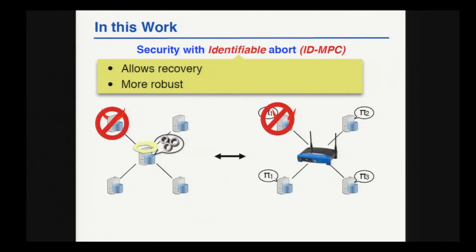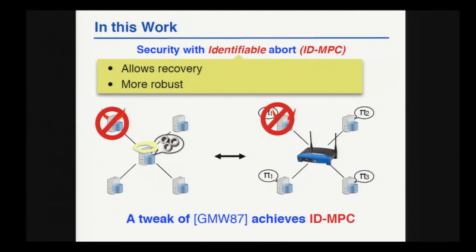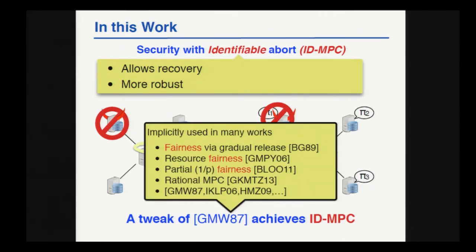In fact, a tweak of the so-called GMW protocol by Goldreich, Micali, and Wigderson does achieve this notion of security with identifiable abort. And although by now this protocol is considered rather inefficient — it is after all a feasibility result — it has still been used as a primitive in many constructions, and very recently, in most furnace constructions, we use GMW.